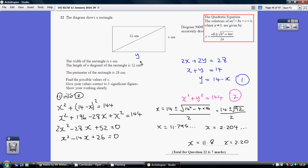So, the perimeter, that's the length all the way around. So, x plus y plus x plus y equals 28. So, we've created our first equation, 2x plus 2y equals 28, or dividing through by 2, x plus y equals 14.